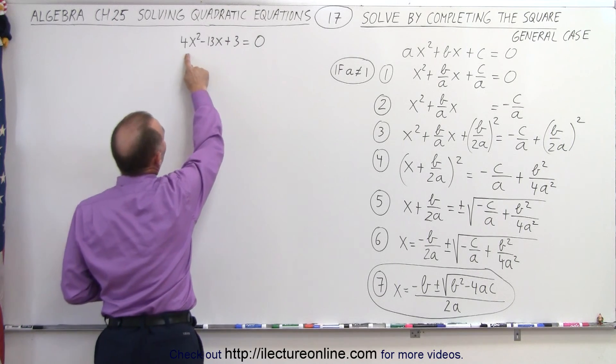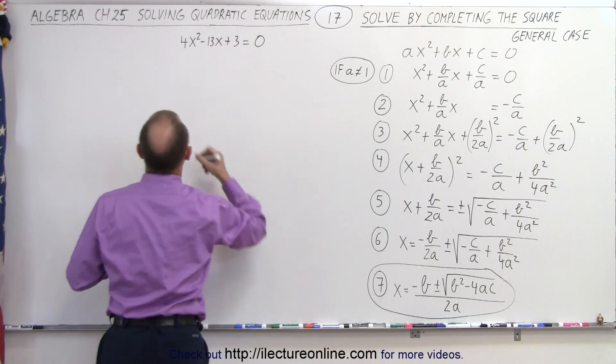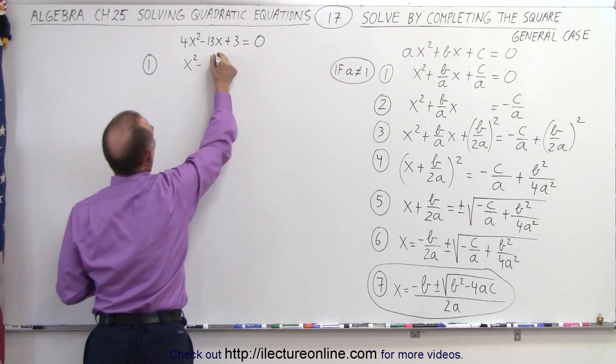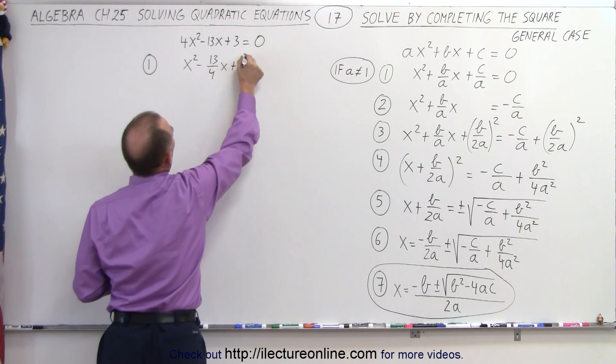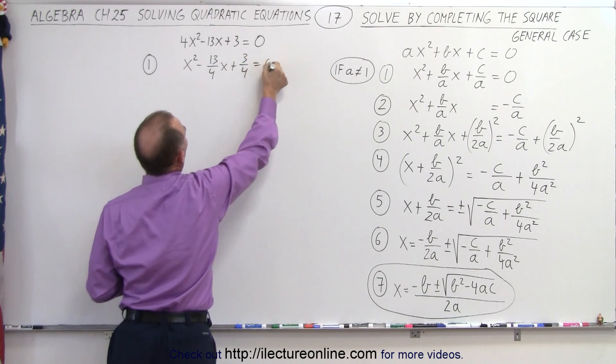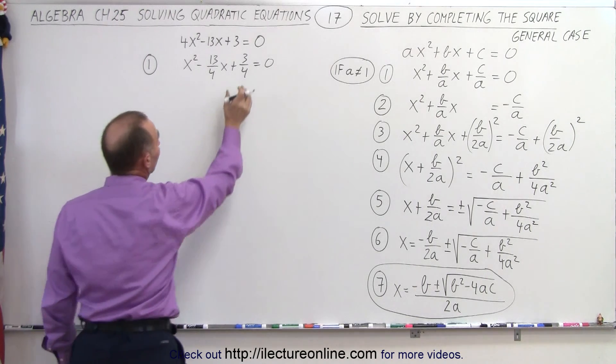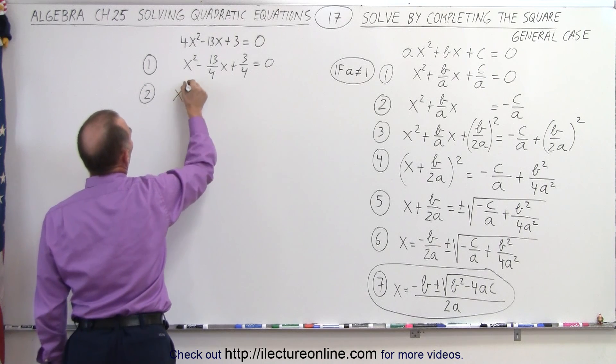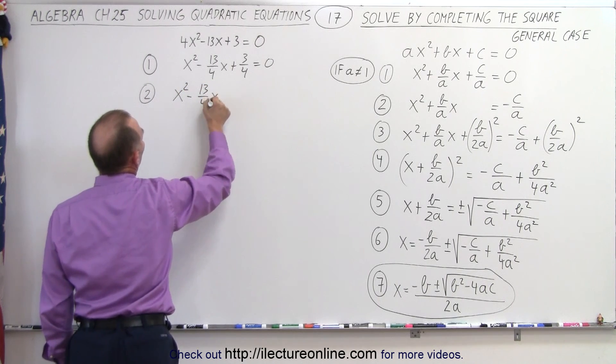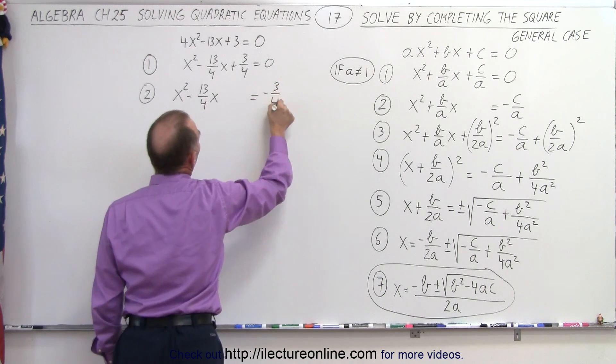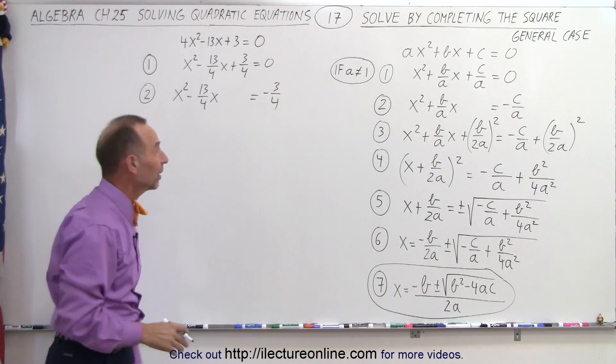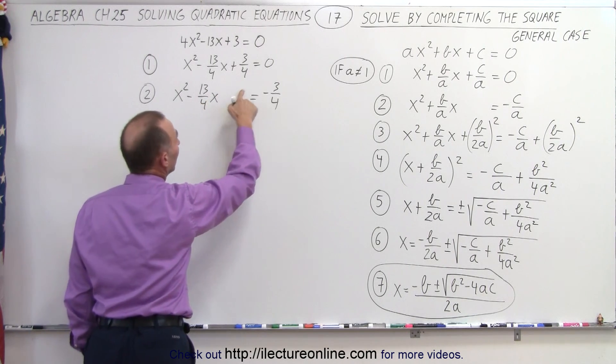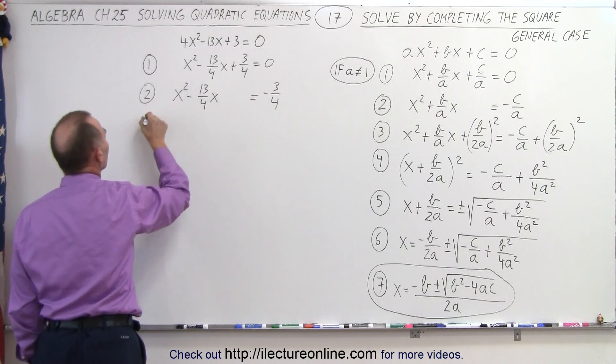The first step would be to divide everything by 4 to turn this into a 1. So step number 1, we divide everything by 4, so we get x² - 13/4x + 3/4 = 0. Step 2 is taking the constant term and move it to the right side. So step number 2, we end up with x² - 13/4x = -3/4. And notice we need to leave some room there because we're going to add something there.